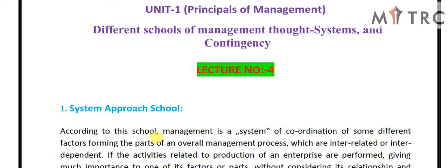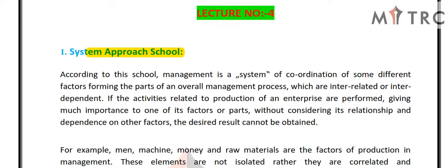So what are the different schools described in this lecture? The first one is the system approach school. According to this school, management is a system of coordination of different factors forming the parts of an overall management process which are interrelated and interdependent. Management is a system of different factors forming the part of an overall management system.